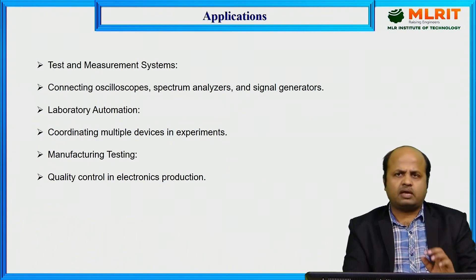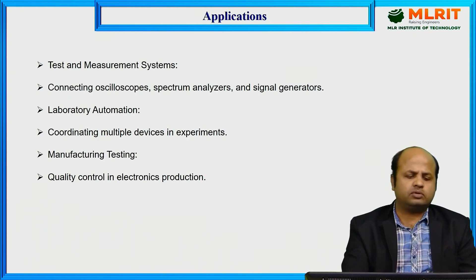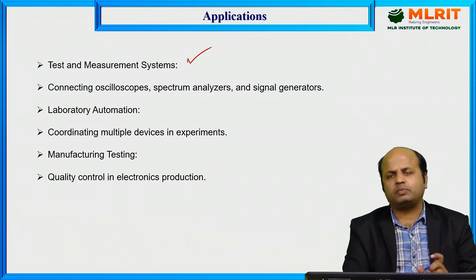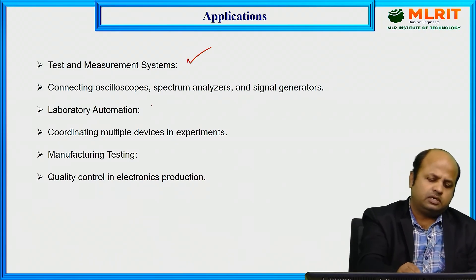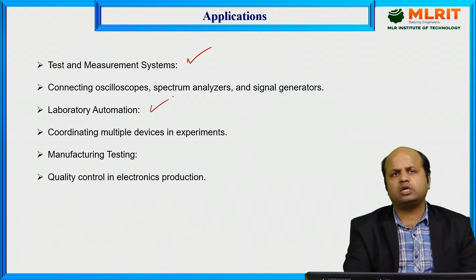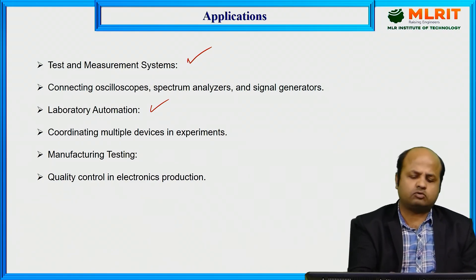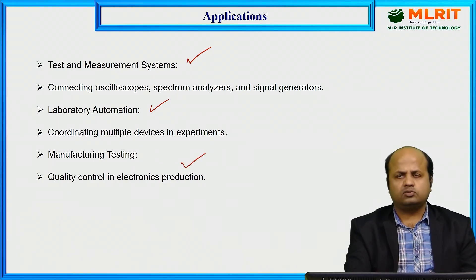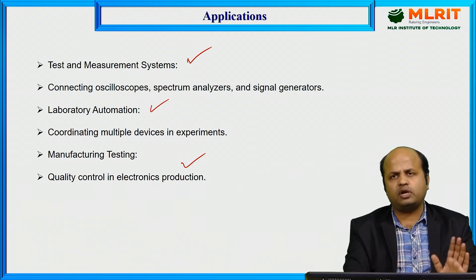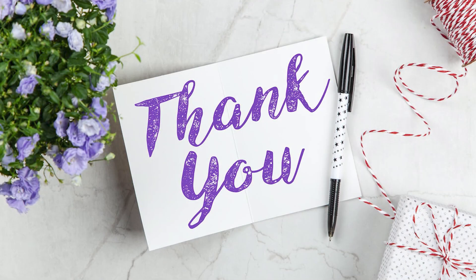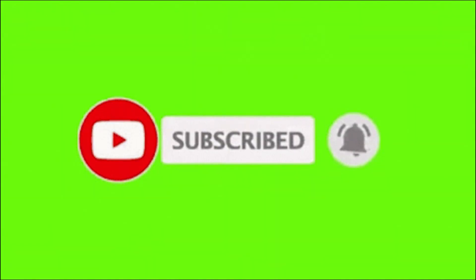The applications of IEEE 488 bus include test and measurement systems, connecting oscilloscopes, spectrum analyzers, and signal generators. It is also widely used in laboratory automation, coordinating multiple devices in experiments, and manufacturing testing for quality control in electronic production. IEEE 488 bus has multiple applications. Thank you.